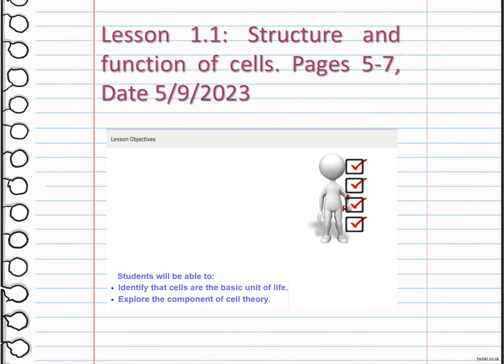We're also going to explore the components of the cell theory. The cell theory consists of three main principles. The first principle states that all living organisms are composed of cells. The second principle states that cells are the basic units of structure and function in living organisms. And the third principle states that cells arise from pre-existing cells through cell division.